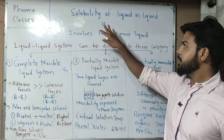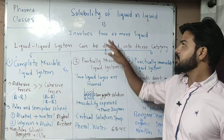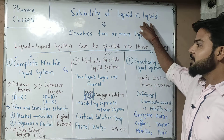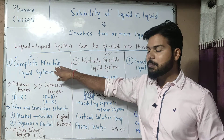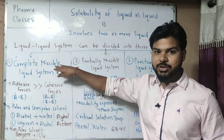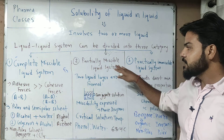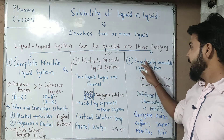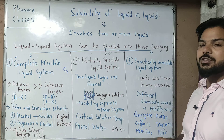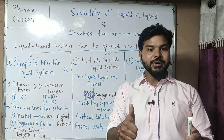So we have seen what we need to discuss in solubility of liquid and liquid. We need to discuss completely miscible liquids, which we will cover in the next class, followed by partially miscible liquids in detail, and practically immiscible liquids. Thank you and all the best.